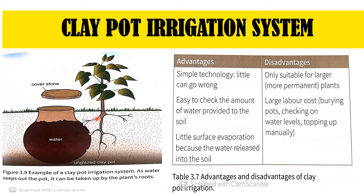The disadvantages of clay pot irrigation are: irrigation is possible only in a limited area; it is not suitable for every crop; it is only favourable for permanent plants; and it involves a large labour cost.